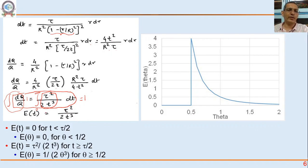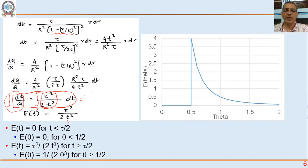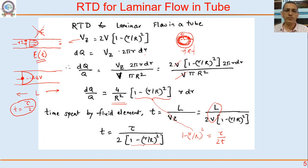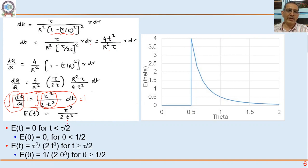Remember, this expression τ²/(2t³) is not valid for t = 0 or for t less than τ/2. Because the parabolic profile has a peak (centerline) velocity of 2V, the fastest fluid element — at the center — exits at time τ/2. So the E-curve is zero for t < τ/2, and E(t) = τ²/(2t³) for t ≥ τ/2. In dimensionless form: E(θ) = 1/(2θ³) for θ ≥ 0.5, and at θ = 0.5 the value is E(θ) = 4.